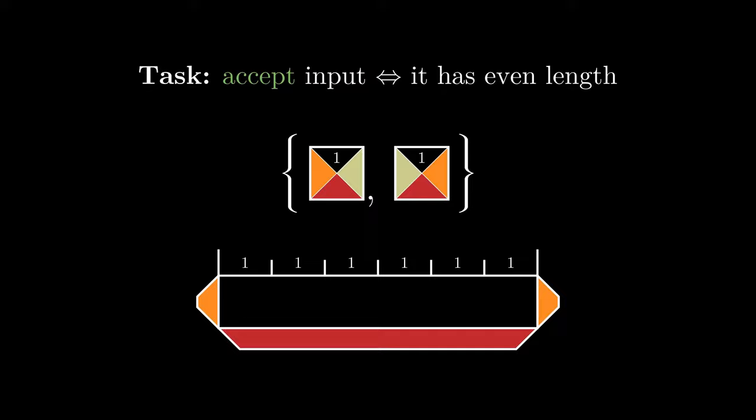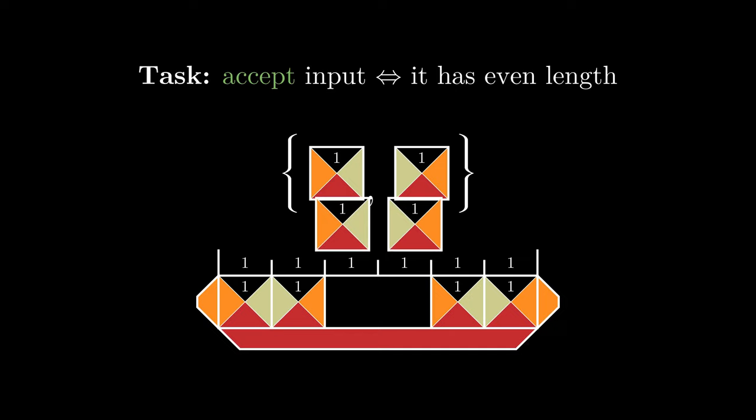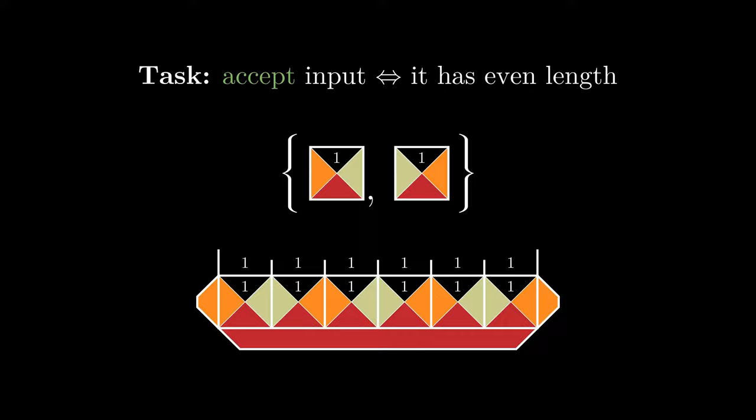It should be pretty obvious why. We have to start with the first tile and end with the second tile. Now notice that the tiles switched roles and we can again place the first and the second tile like so. Since we're always forced to add tiles by twos for the middle colors to match, the input length must be even, else the tiling cannot exist.